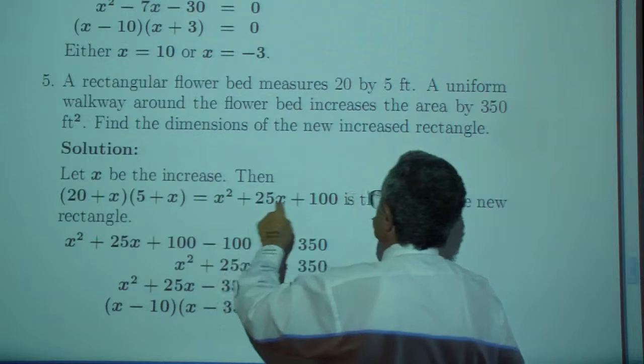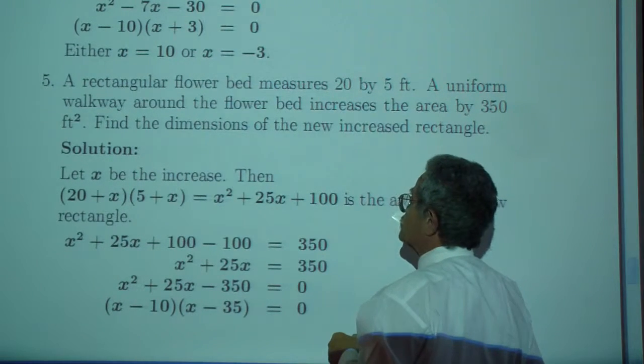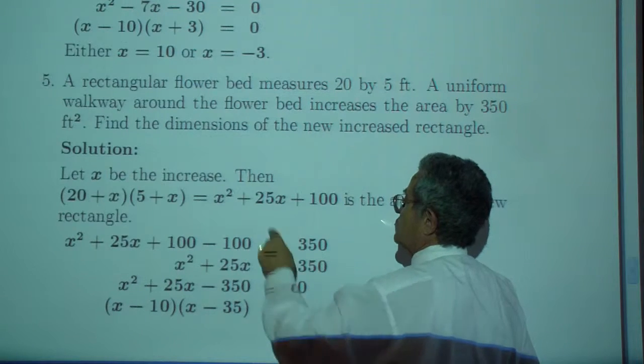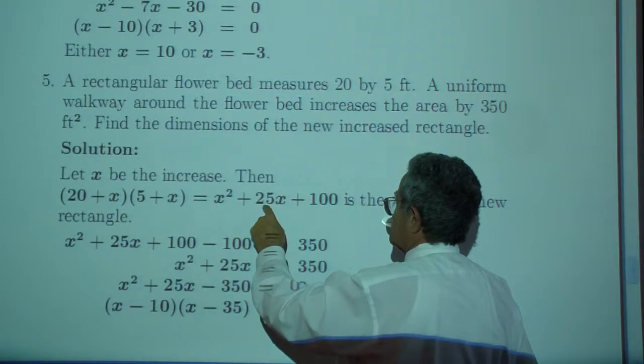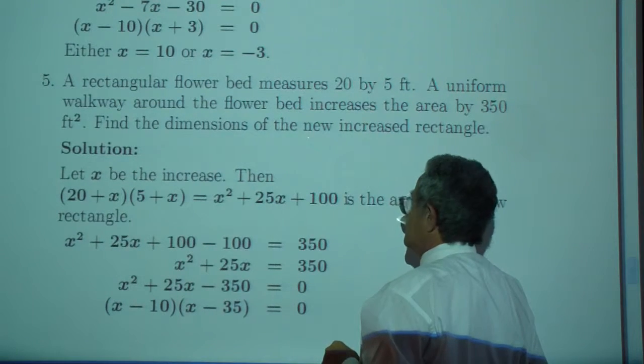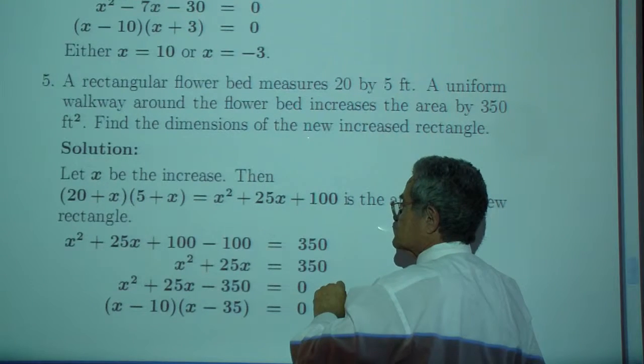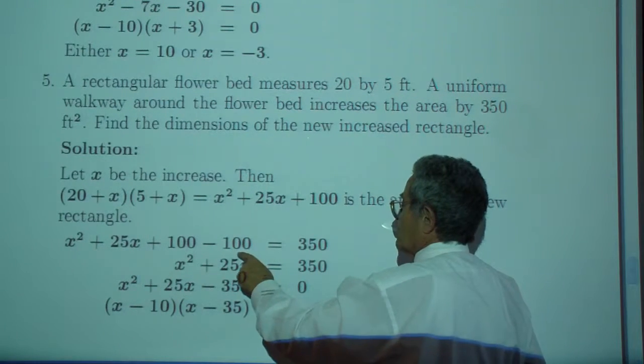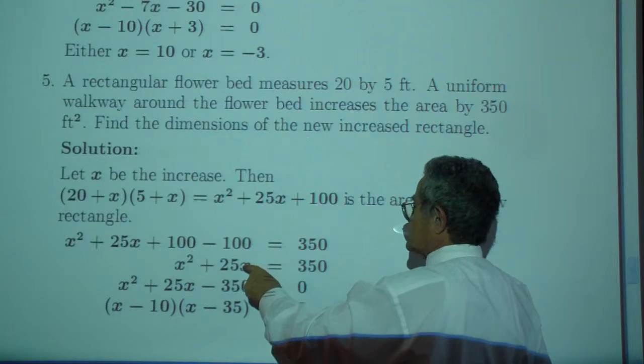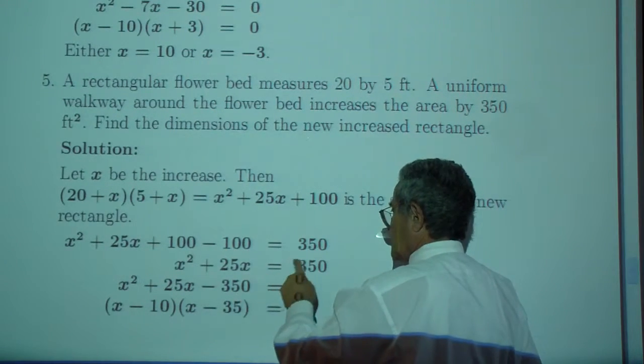You get X squared plus 25X plus 100, which looks like a perfect square. No, it can't be, because this has to be the double product and 25 is not an even number. So we have the increase, and the original flower bed was five times 20, so we take that away.